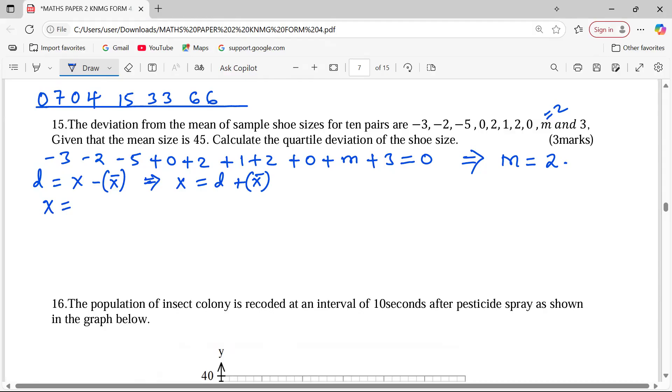So every deviation from the mean will give us the shoe size. So the shoe sizes now, which is the values of x, are going to be negative 3 plus 45. So the first one is 42. Negative 2 plus 45, this is 43. The next is a negative 5 plus 45, giving us a 40. The next is a 0 plus 45. 2 plus 45. 1 plus 45. 2 plus 45. 0 plus 45. Then 2 plus 45. And finally 3 plus 45, which is 48. So these are now the values of the shoe sizes.